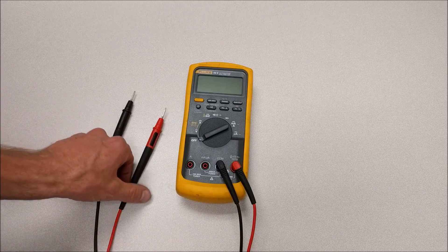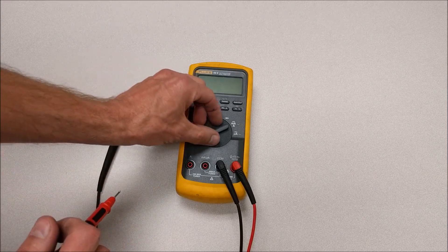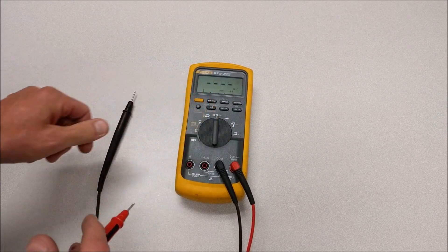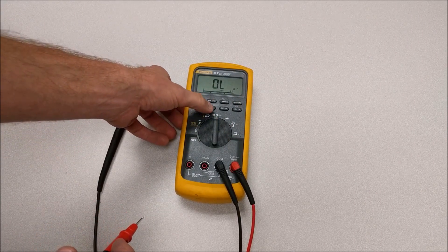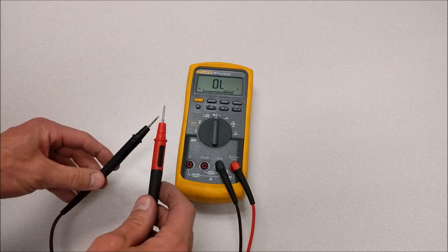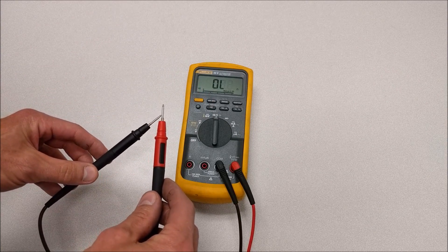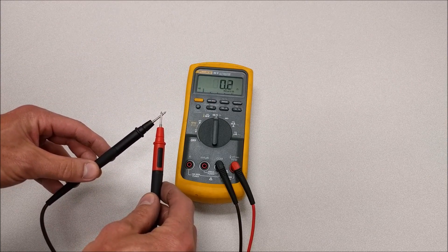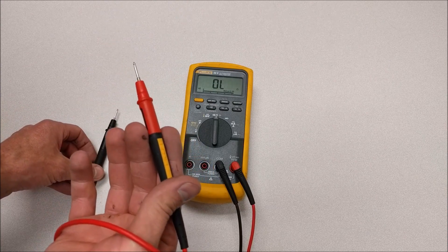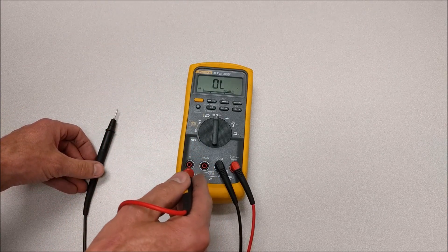And those fuses can blow, but there's a quick way to check those, and that's to turn the multimeter to the ohm setting. If you've got an audible continuity checker, you can also hit that button so that it beeps when you have continuity or low resistance.